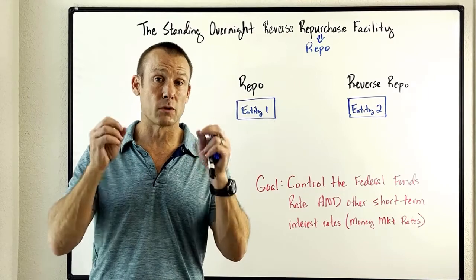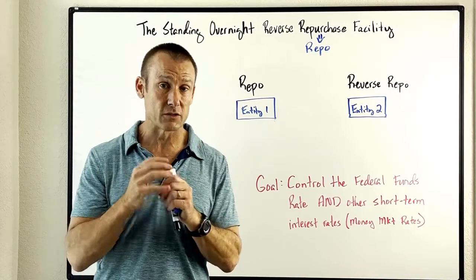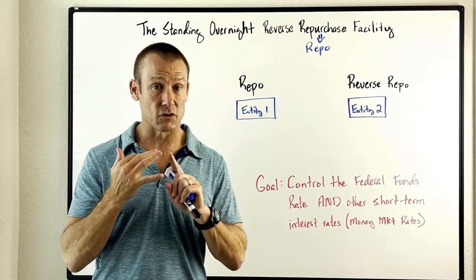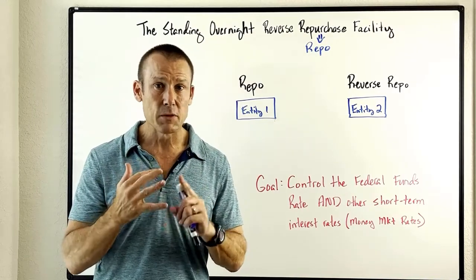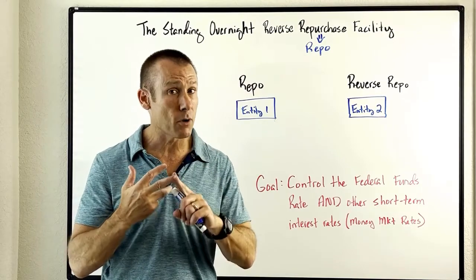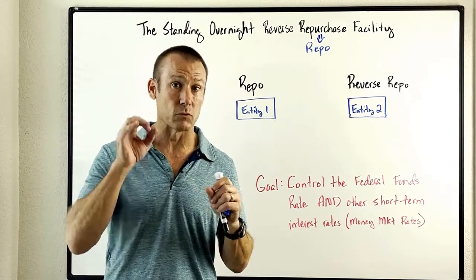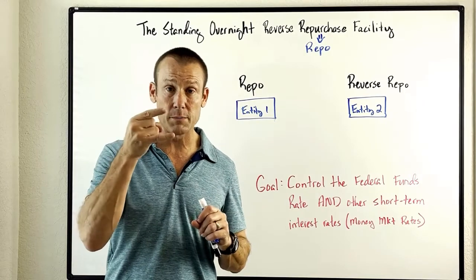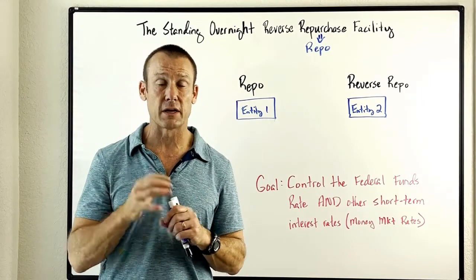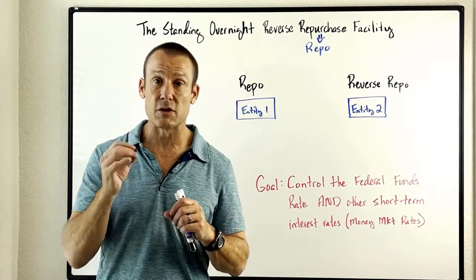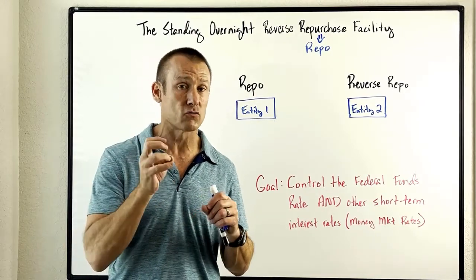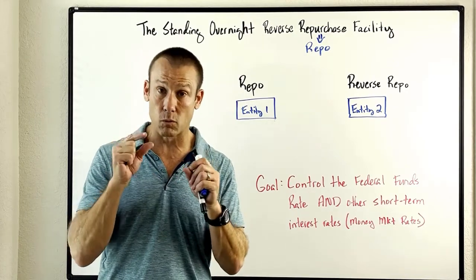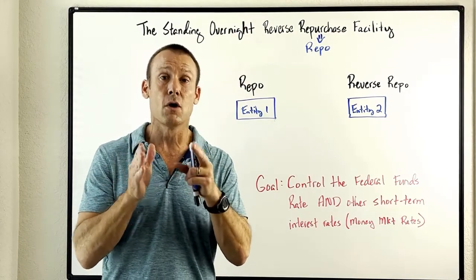Simply doing open market operations under an ample reserve or super-abundant framework would not change the federal funds rate. These new policy tools were administered rates. The two administered rates are: the interest rate on reserve balances and the overnight reverse repurchase agreement rate — which is what this video is all about. Those two administered rates are what the Fed now uses to control the federal funds rate.